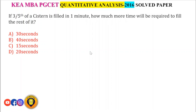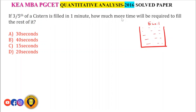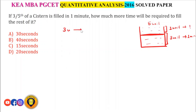If 3/5 of a cistern is filled in 1 minute, how much more time will be required to fill the rest? Suppose the total capacity of this cistern is 5 units. Then 3/5 of 5 is 3 units, which is filled in 1 minute. So 2 units remain.